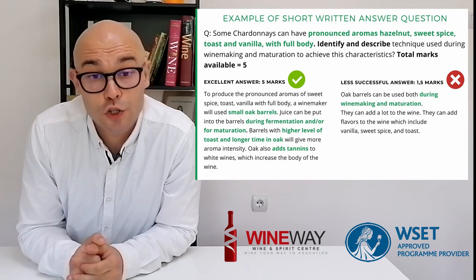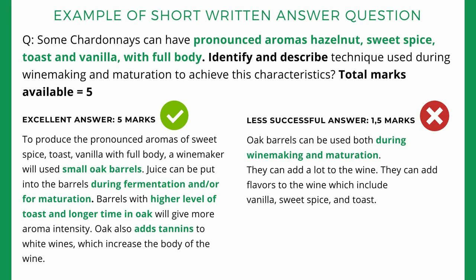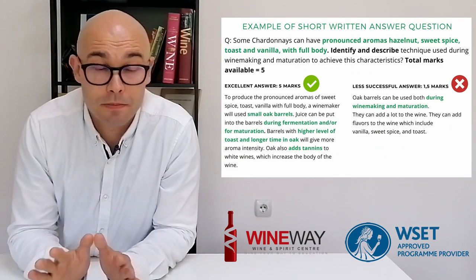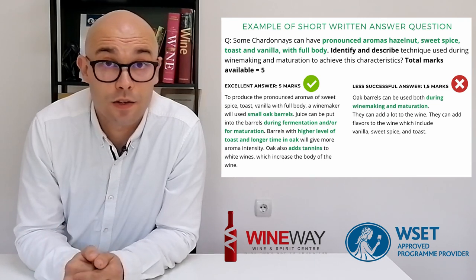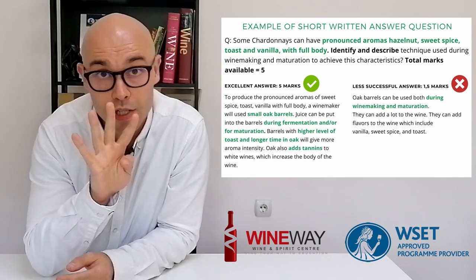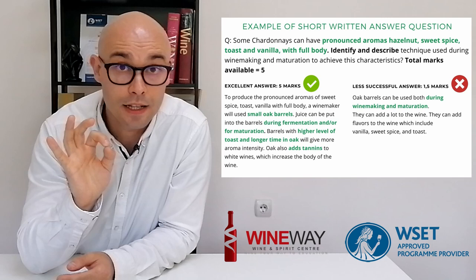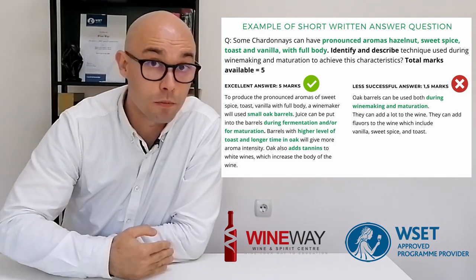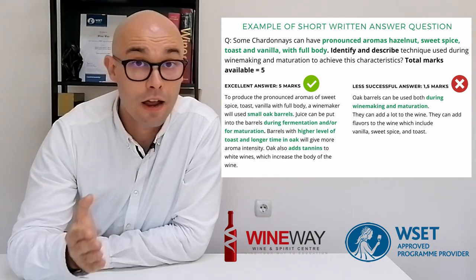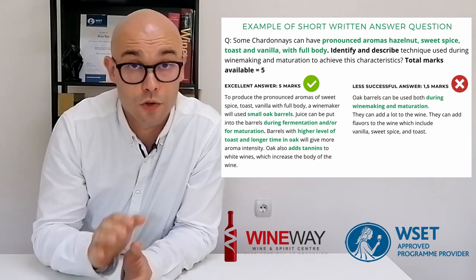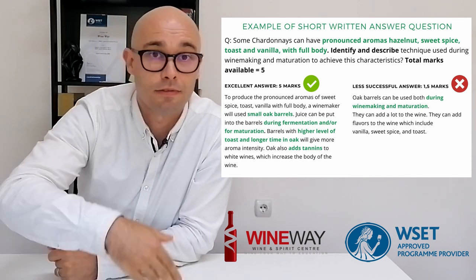Here is an example of a short written answer question: 'Some Chardonnays can have pronounced aromas of hazelnut, sweet spice, toast and vanilla with full body. Identify and describe the technique used during winemaking and maturation to achieve these characteristics.' Total marks available: five. Note that the four short written answer questions worth 25 marks each can be divided into multiple sub-questions with different mark values — some worth five marks, some only two — so don't be surprised if you have more than four questions at the exam.